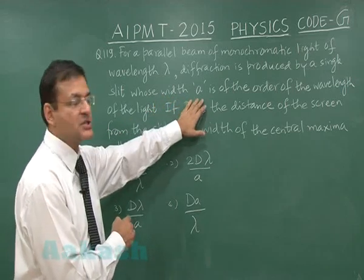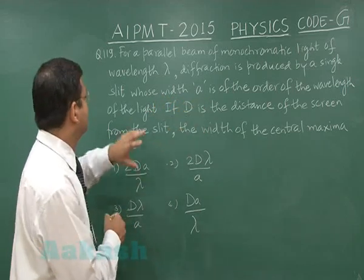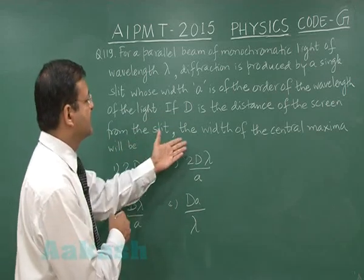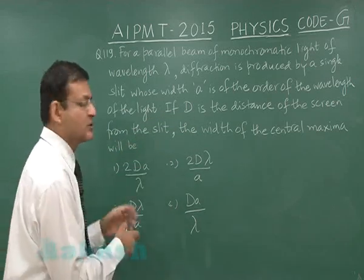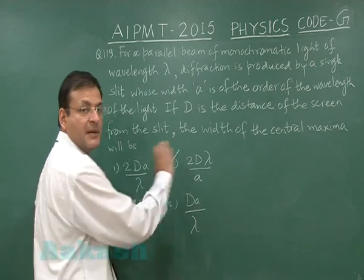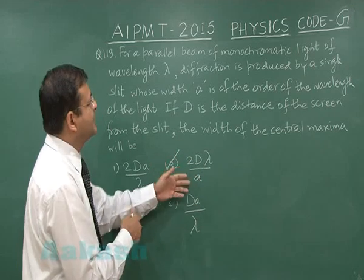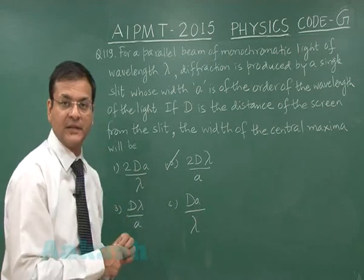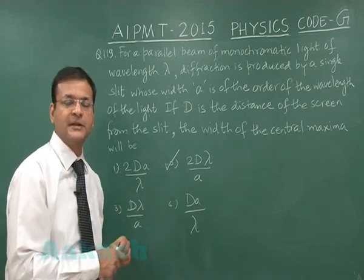The aperture given is of the order of the wavelength of the light. If D is the distance of the screen from the slit, the width of the central maxima will be 2λD upon a. For small d they have given the aperture a, so you have to mark option 2 for this question 119. This is straightforward formula of width of the central bright.